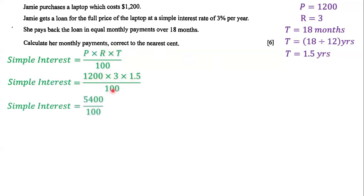We multiply 1,200 by 3 by 1.5 and get 5,400. Then we divide 5,400 by 100, which gives us 54. So the simple interest is 54.